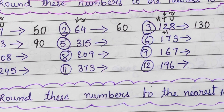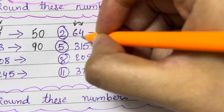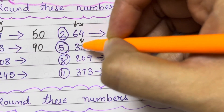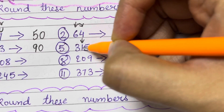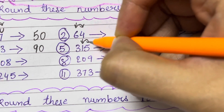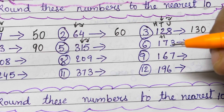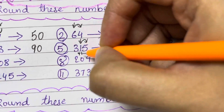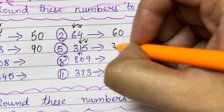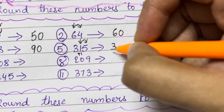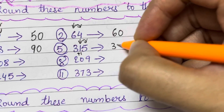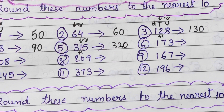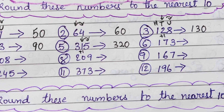315. Rounding the tens place — tens place is 1. This is units, tens, and hundreds. After the tens place, the digit is 5. If it is 5 or more than 5, you add plus 1 to the tens place. So 3 remains the same, then 1 plus 1 gives you 2, and the 5 is replaced by 0. So your answer is 320.